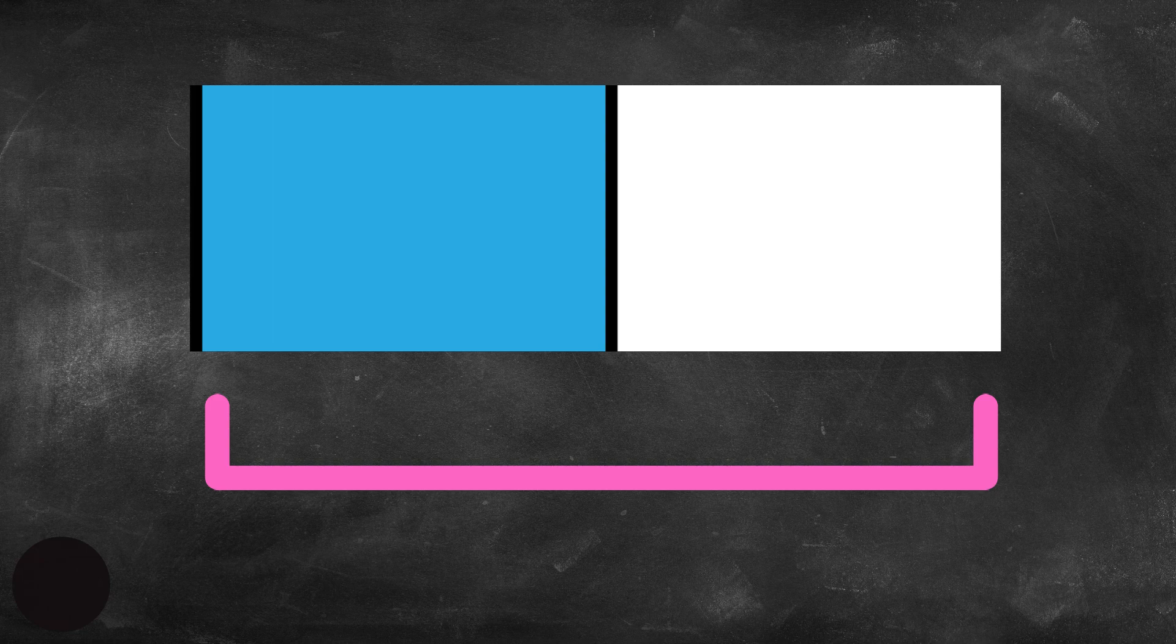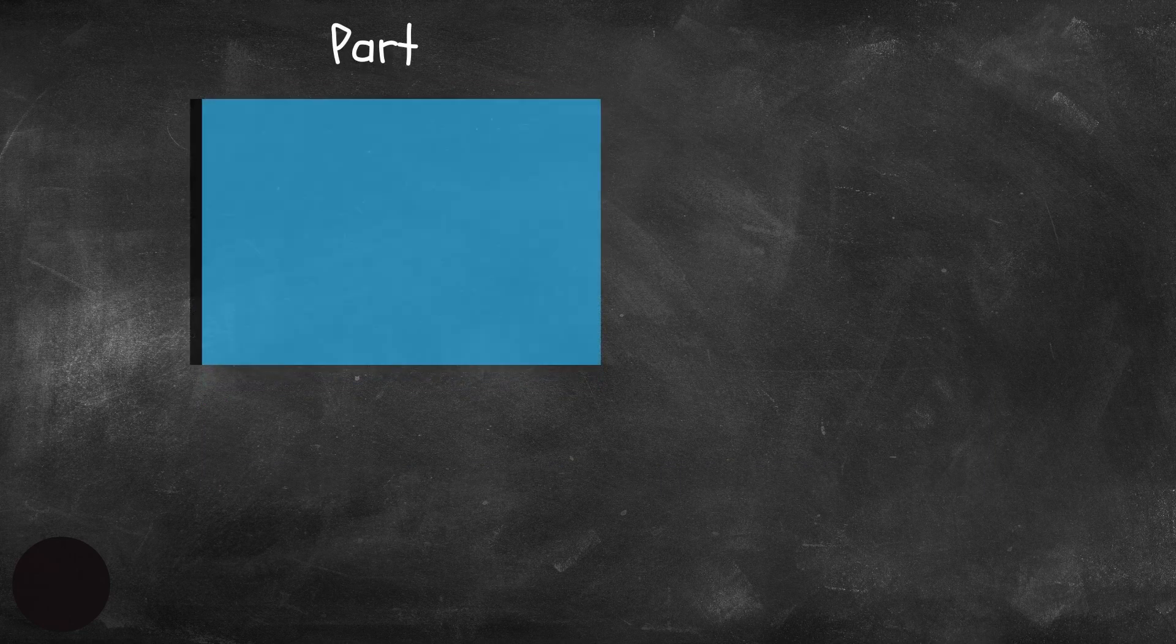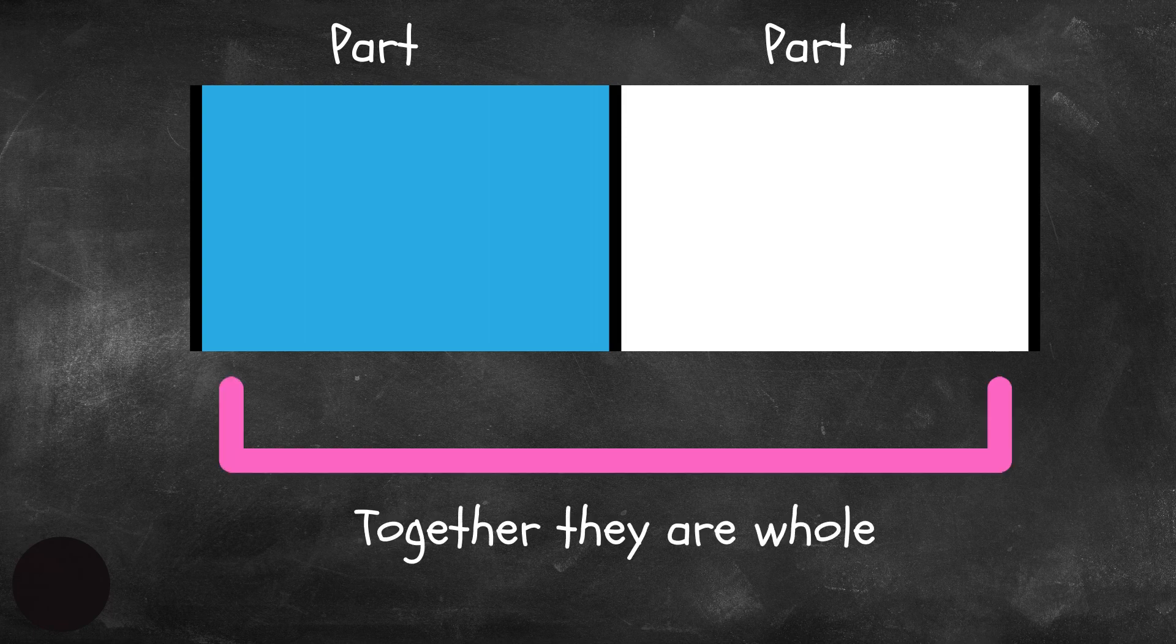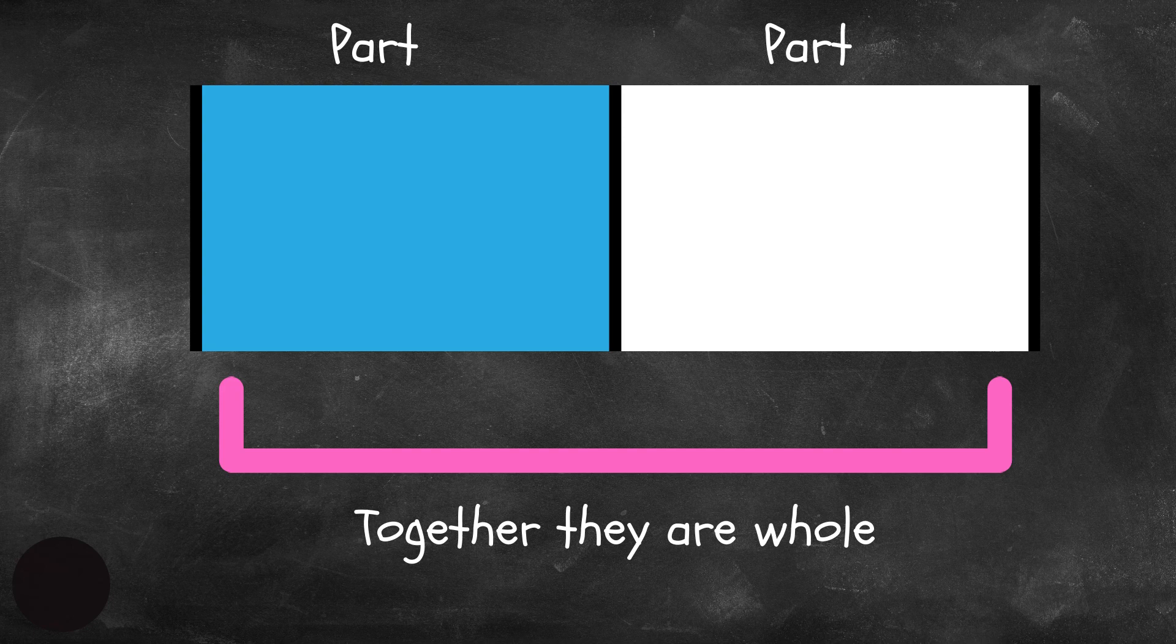This is what a bar model looks like. A bar model has parts. This is a part. And here is another part. Together, they are a whole.